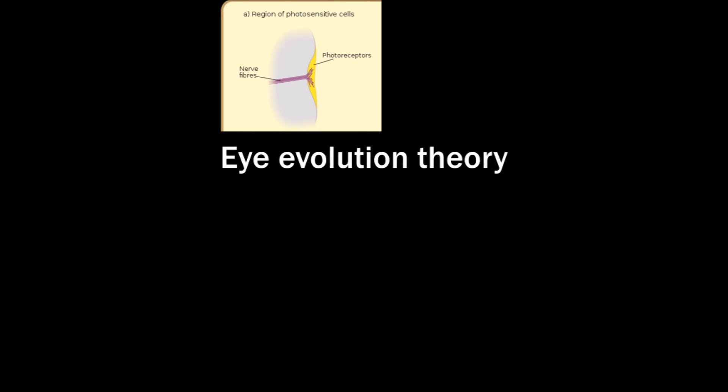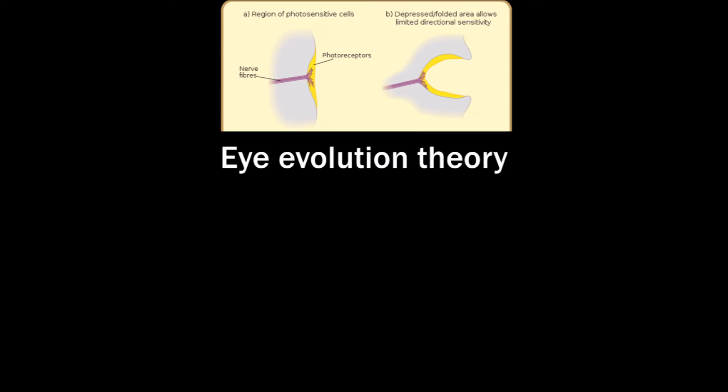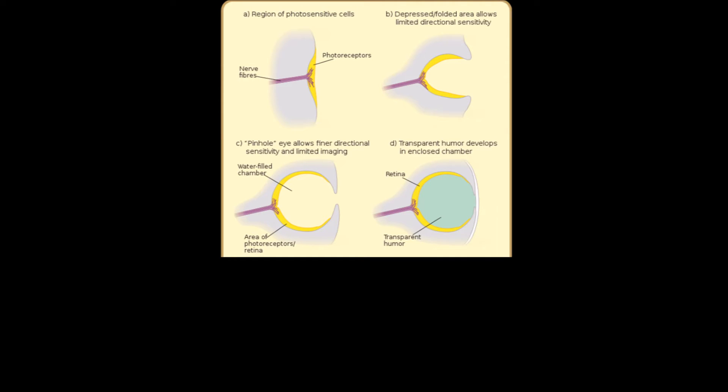First, there would be a light receptor. Then that would become hollow to make it possible to direct our eyes to something. That would improve through time. Then some transparent body would form.